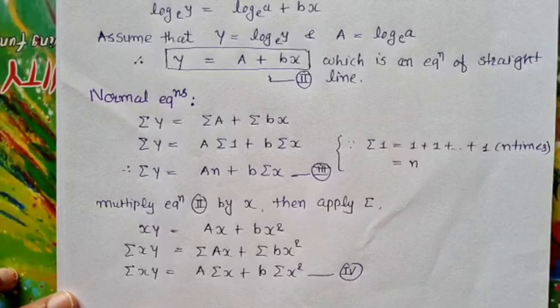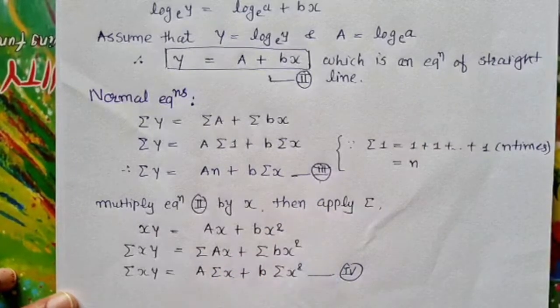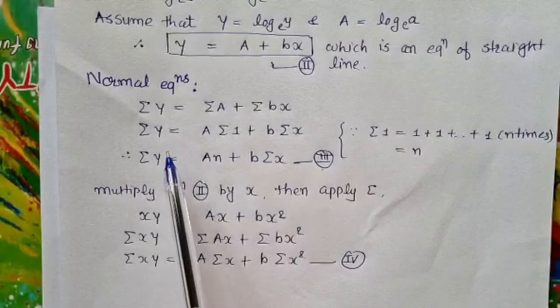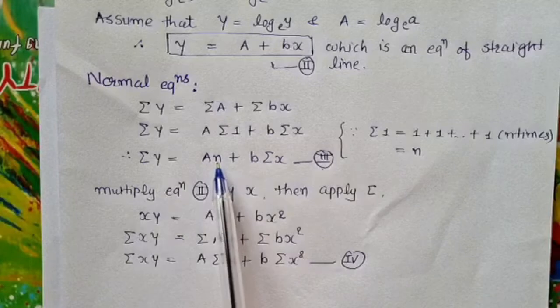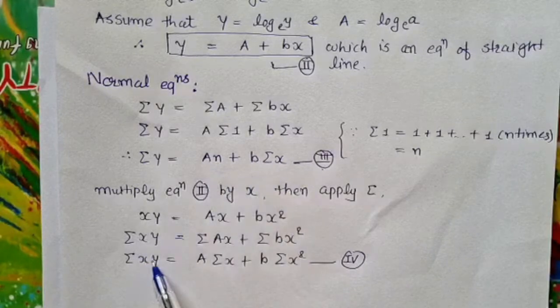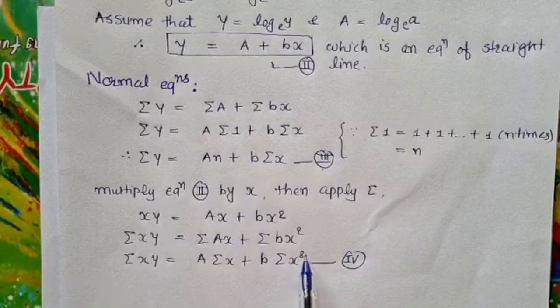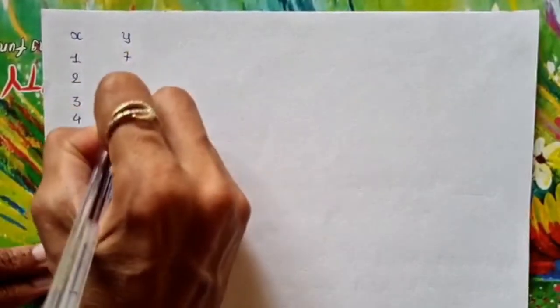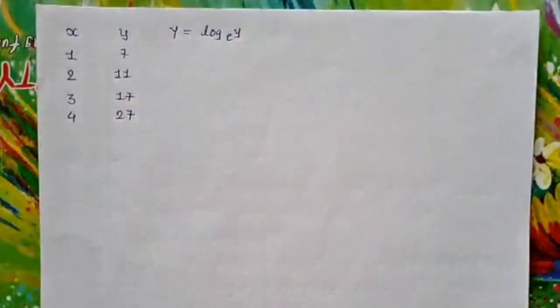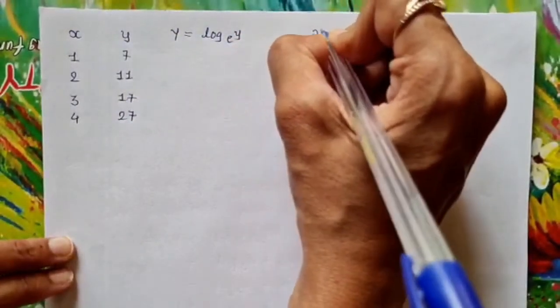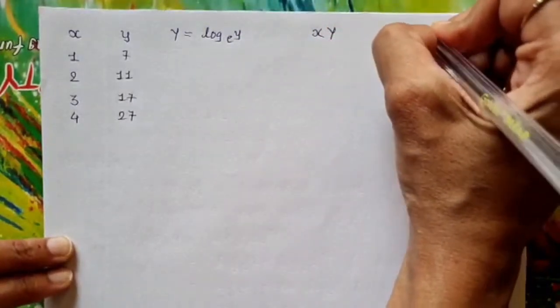Now we have normal equations 3 and 4. We make a table to find all required values: summation Y, n (number of data pairs = 4), summation x, summation(x·Y), and summation(x²). The x and y data are: x = 1, 2, 3, 4 and y = 7, 11, 17, 27. Capital Y equals log y (base e): log 7 = 1.9459, log 11 = 2.3979, log 17 = 2.8332, and log 27 = 3.2758.